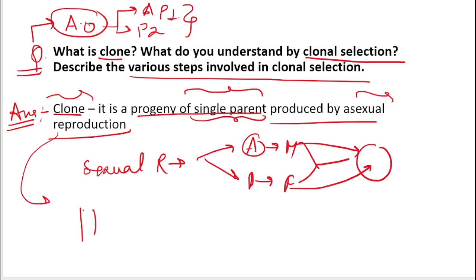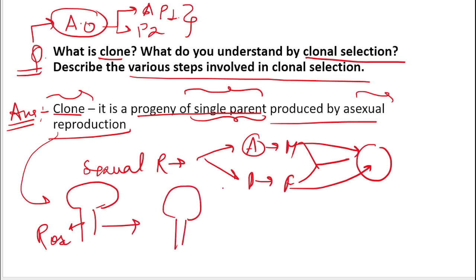For example, here is a rose plant. This is the clone — you will find that it is very similar, an exact same copy of its parent. It is the exact same plant. So this is what a clone is.